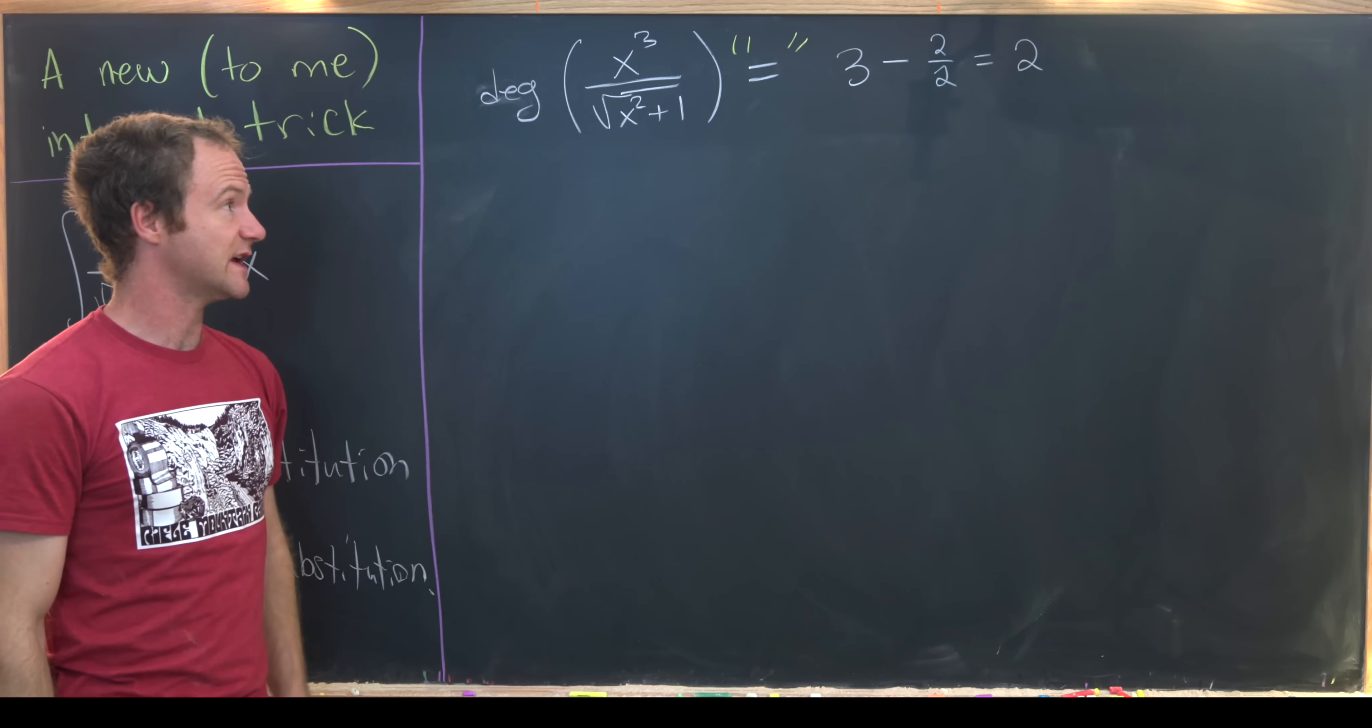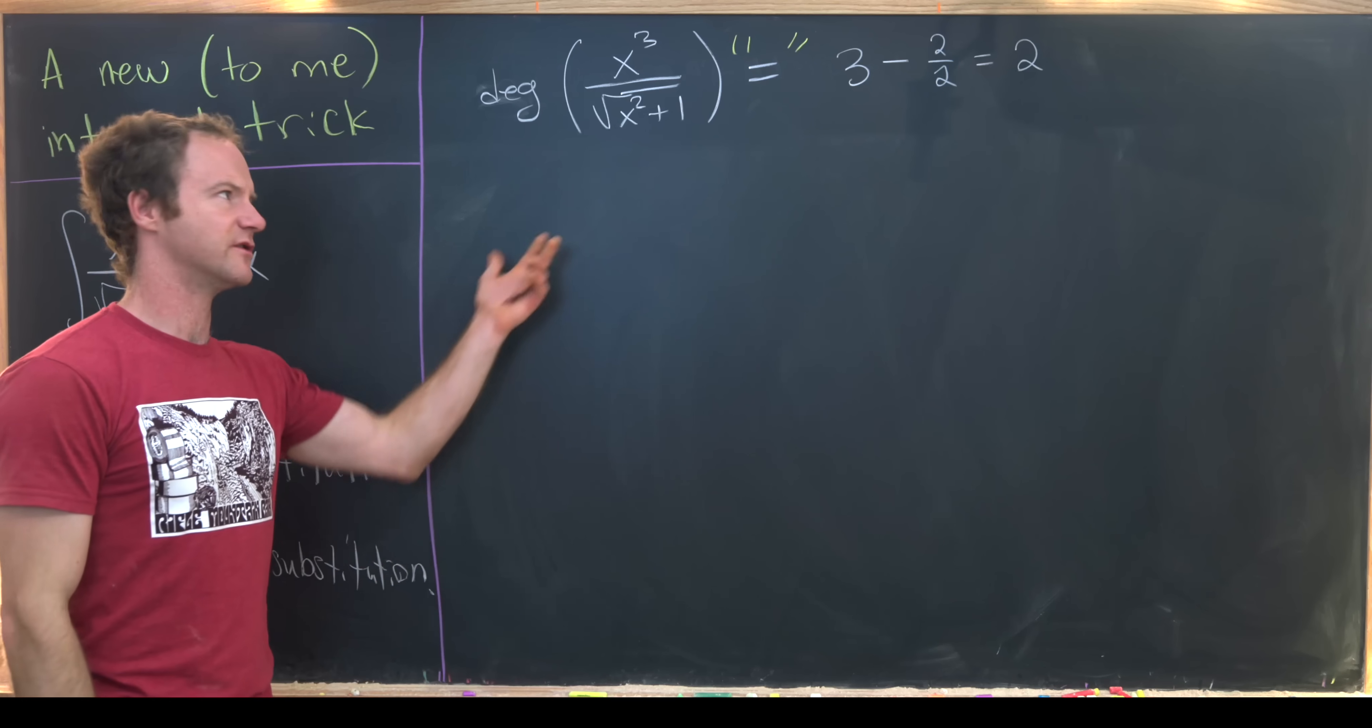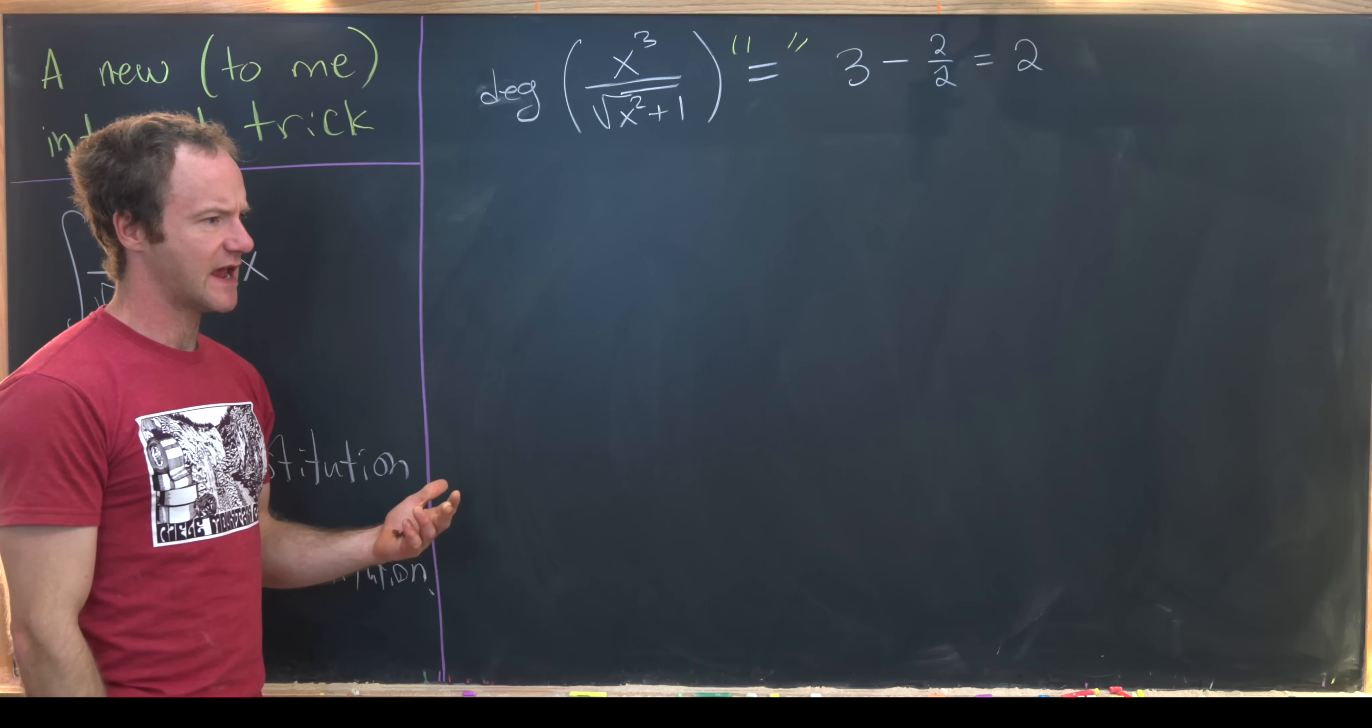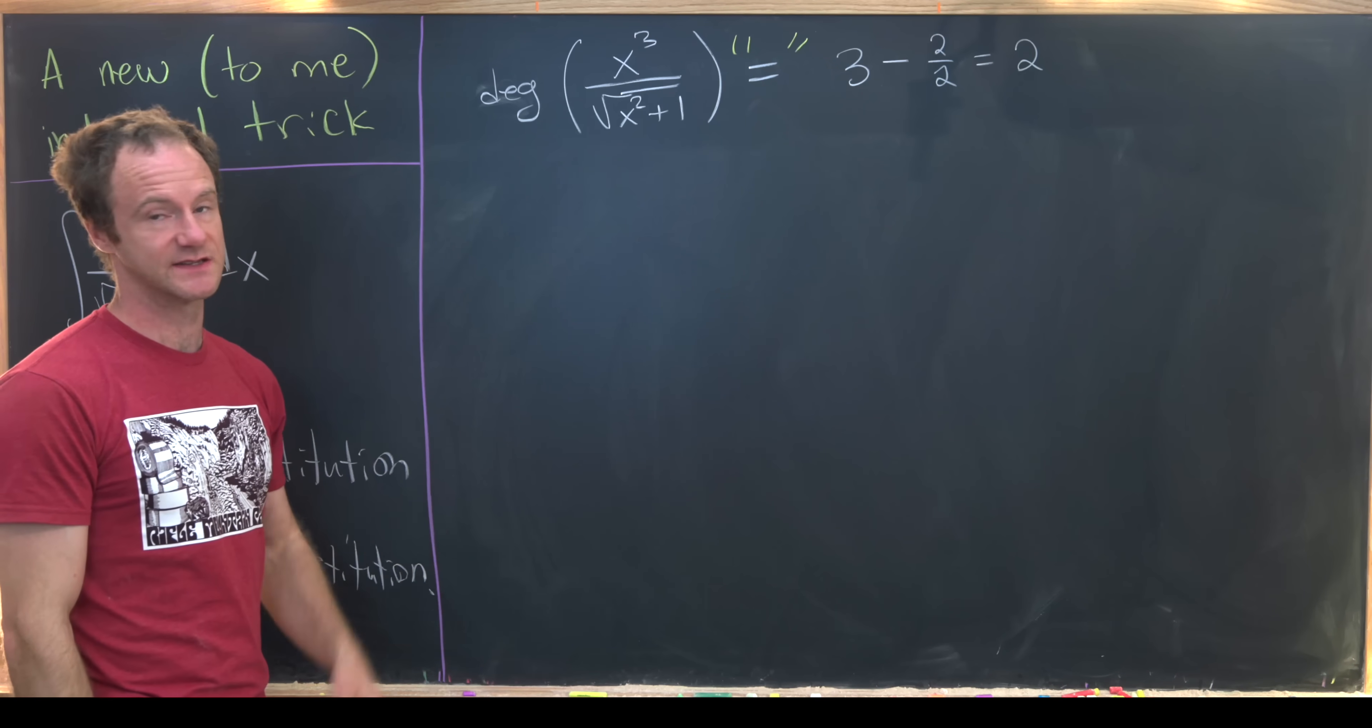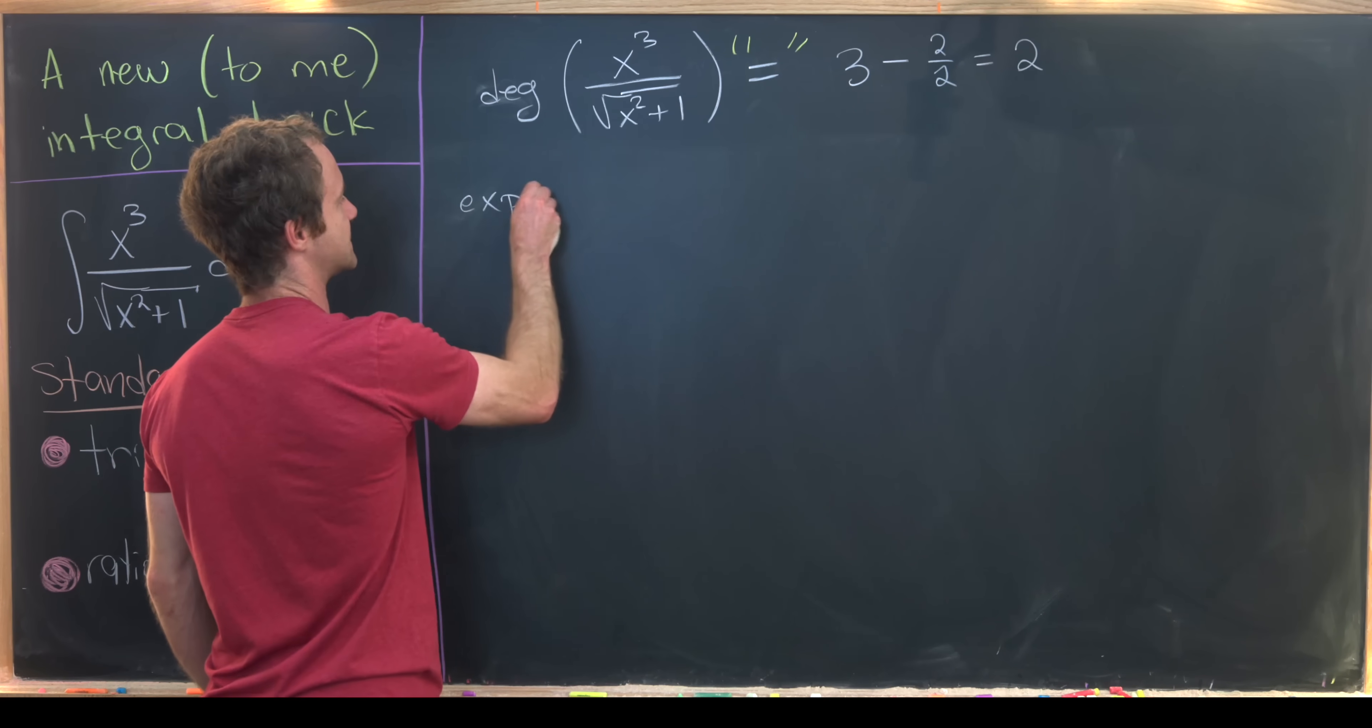Well, since the degree is essentially equal to 2 under this loosened idea of the degree, and when you take the antiderivative of a polynomial, it increases the degree by 1.